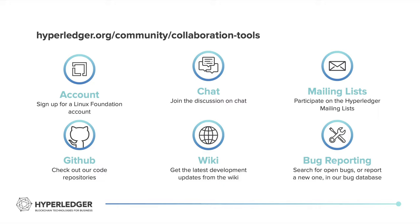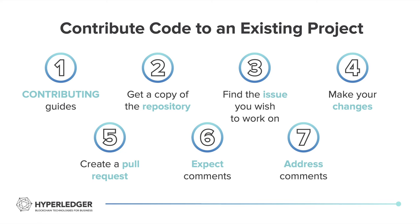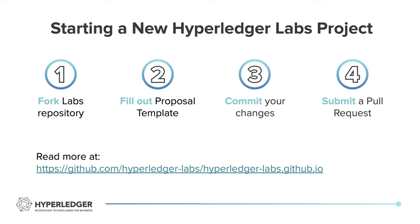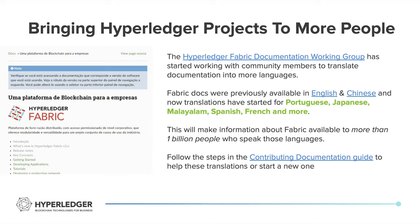Hyperledger projects use a common set of collaboration tools. Links to these tools will be provided in the description of the video below. The general steps for contributing code and documentation are outlined on this slide. If you wish to start a new Hyperledger Lab project, the instructions will be linked in the description below. Hyperledger is a diverse global community that speaks a variety of languages. One of our current projects is translating Fabric documentation into many languages — a link on how to get involved will be in the description of the video.